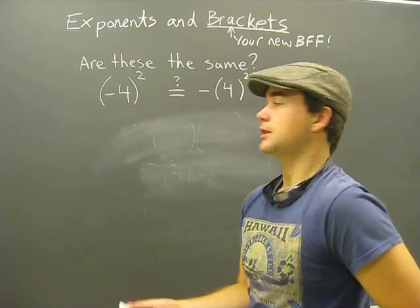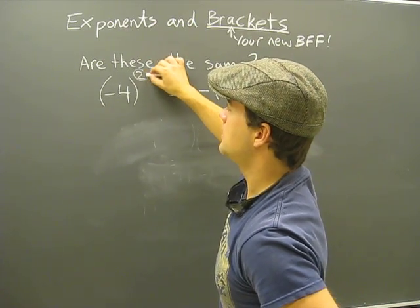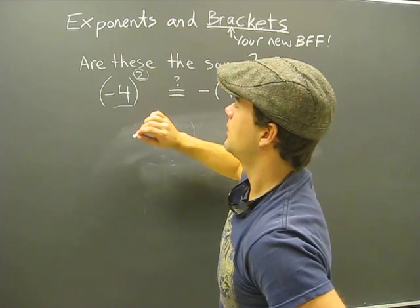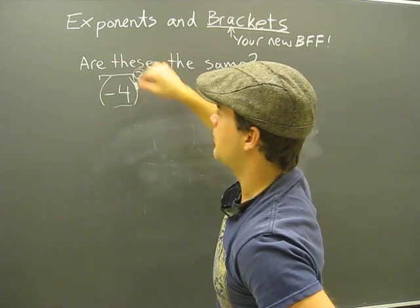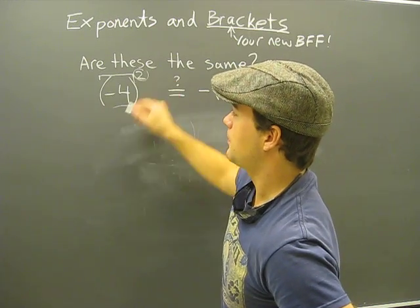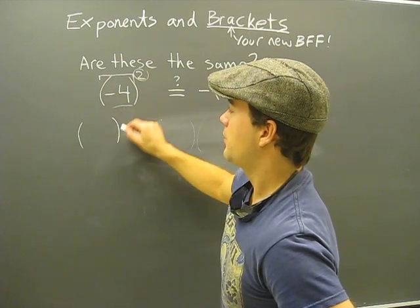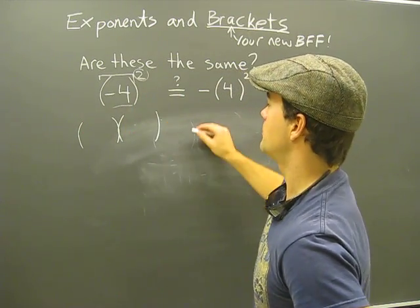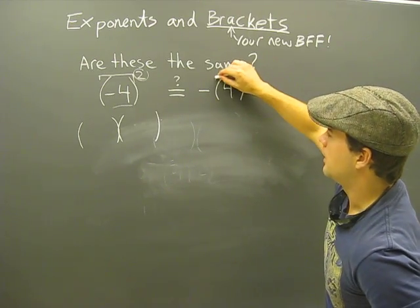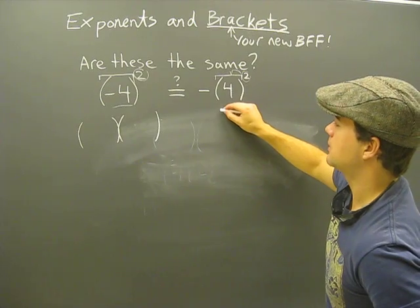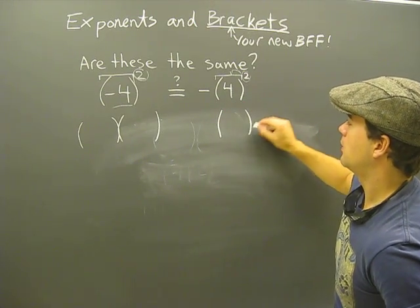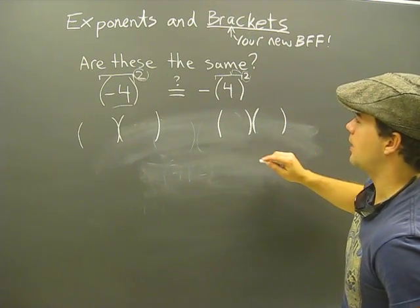The first thing we need to remember in exponents is that this is the exponent and this is the base. This exponent applies to everything that is in the brackets. So this really is the same as whatever the brackets was, 2 times. Likewise for this, this exponent applies to whatever the brackets are, 2 times.